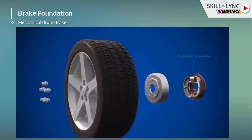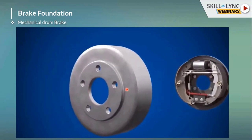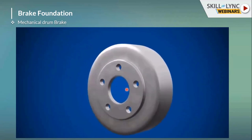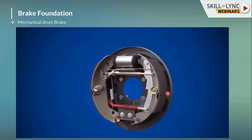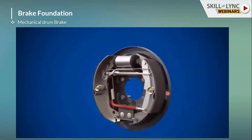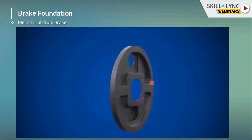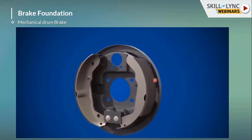This is the foundation brake system. This is the back plate assembly and this is the brake drum, and this is the wheel — the brake drum is completely coupled with the wheel. The brake drum is mostly made of cast iron. This is the back plate assembly, which is also coupled with the vehicle wheel assembly on the wheel axle. This is the brake pad, and above the brake pad is the brake lining, which is the friction plate.